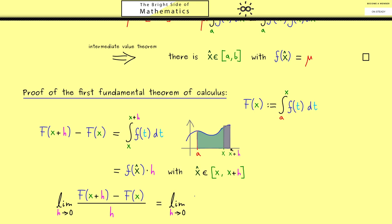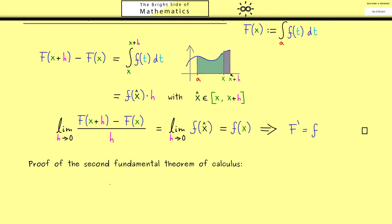In the limit as h tends to 0, we look at what happens to f(x-hat). As h gets smaller and smaller, there are fewer choices for x-hat, and since f is a continuous function we get f(x) in the limit. So in conclusion the derivative of capital F exists and F′ equals lowercase f — capital F is an antiderivative of lowercase f. The first fundamental theorem of calculus is proven: such an integral always gives an antiderivative.